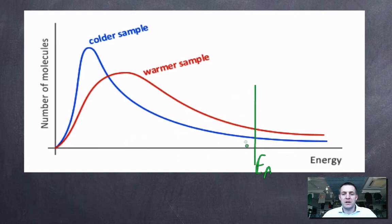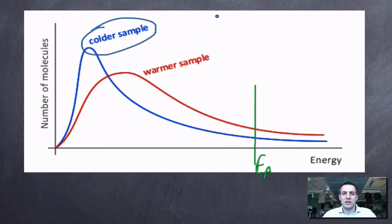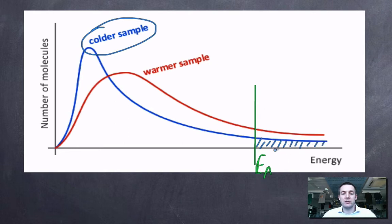This activation energy would have a numerical value, but I'm marking it at an arbitrary point for now. Let's focus on the cold sample. In the colder sample, I can represent the particles with enough energy to react by the shaded area under the curve to the right of the activation energy — because the area under the curve refers to the total number of particles, and all particles in that region have at least this much energy, so if they collide they will react.